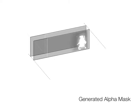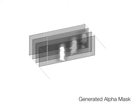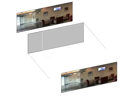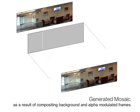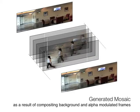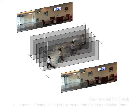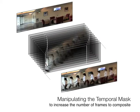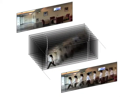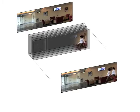The resulting alpha mask for each frame is shown here. The mosaic is then a composition of the regions defined by the mask. Different types of compositions can be created by manipulating the temporal mask.